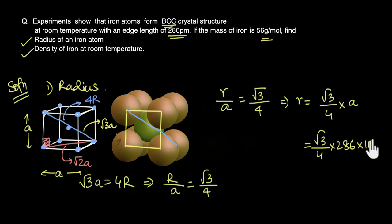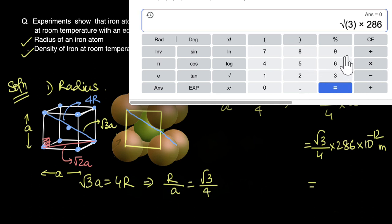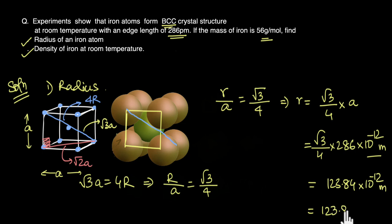Picometer means 10 to the power of minus 12 meters. Using my calculator: √3 into 286 divided by 4 comes out to be 123.84. So the radius is 123.84 × 10⁻¹² meters, which is 123.84 picometers.